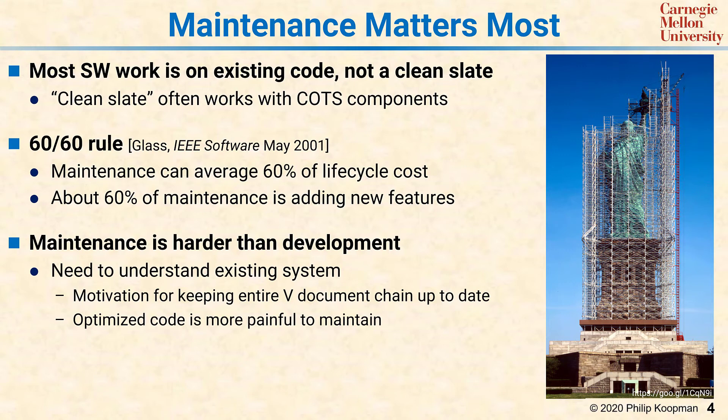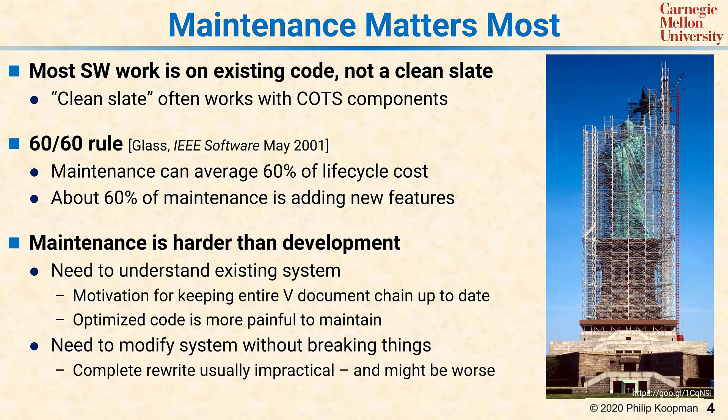If you've had an entire V process that has documentation and that documentation is up to date, then that helps you with maintenance, because now you have a starting point — you actually know what the requirements are and what the test plan is. Related to this is that optimized code is more painful to maintain. Optimized code is usually harder to understand but runs faster, and heaven help you if you have to actually change it. The important part of maintenance is the ability to modify a system without breaking things, so you need to understand what the system's doing, understand all the dependencies — hopefully they're documented — and make changes without breaking things.